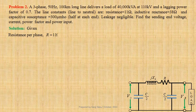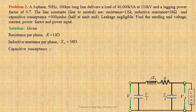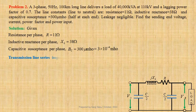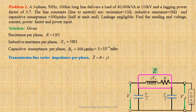Given resistance per phase R equals 11 ohm, inductive reactance per phase XL equals 38 ohm, and capacitive susceptance per phase Yc equals 300 micro mho, that is equal to 3 × 10⁻⁴ mho. Transmission line series impedance per phase Z equals R plus j times XL, that is equal to 11 plus j38 ohm, which may be written in polar form as 39.56 ohm at an angle 73.8557 degrees.